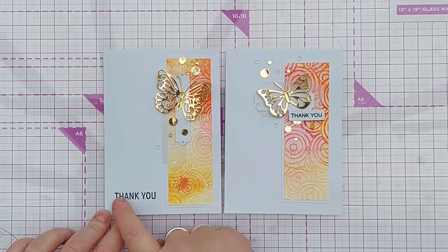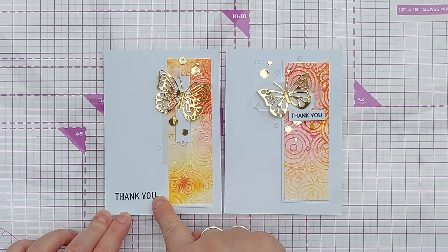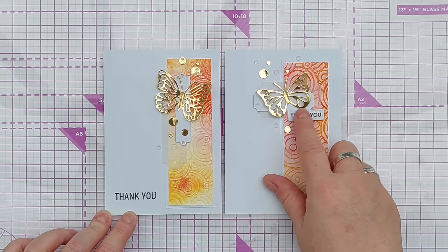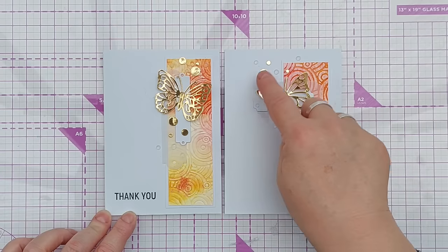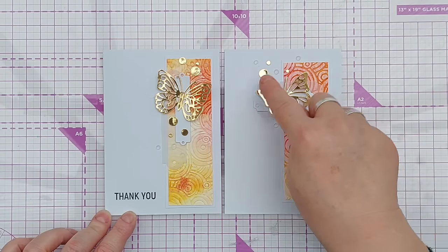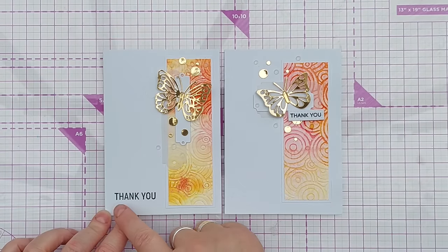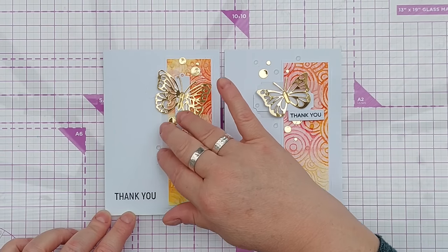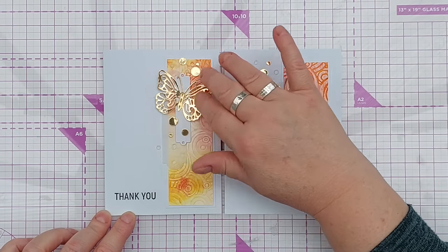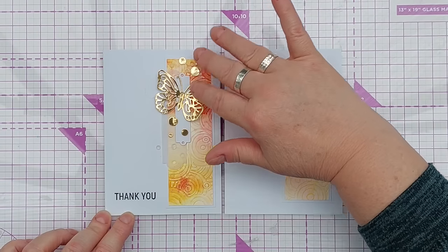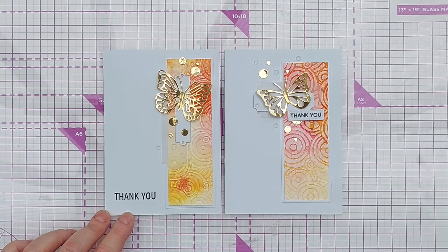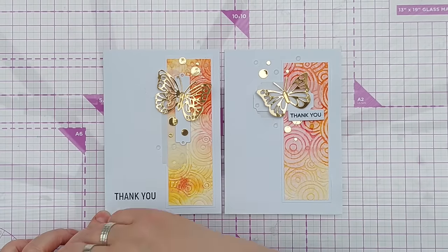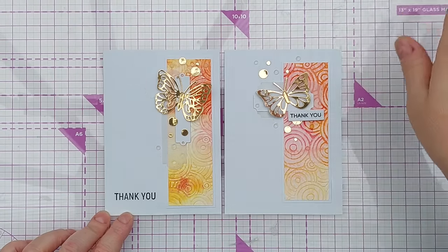This one is slightly different in that I've put the black stamped thank you down here. It's not popped up on foam tape or part of the embellishment cluster, it's down here. So it grabs the eye but then these little embellishments and the butterfly draw the eye up here. So we've got a lovely pop of toned down colour in the background and a nice diagonal flow.